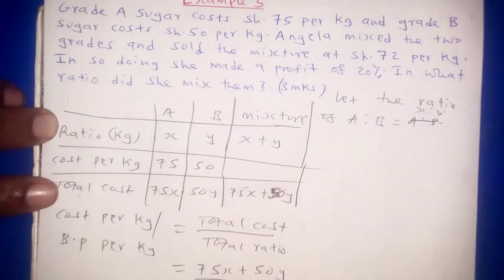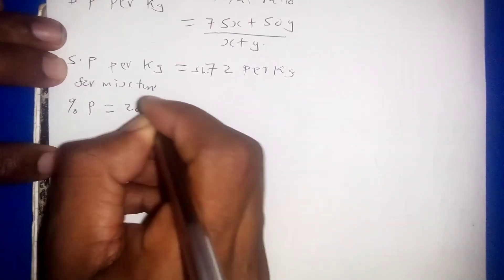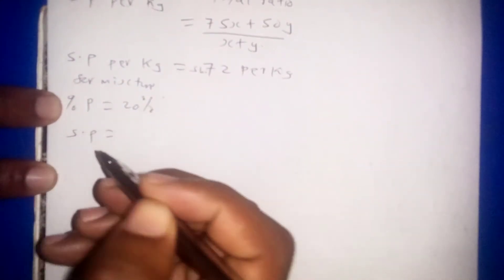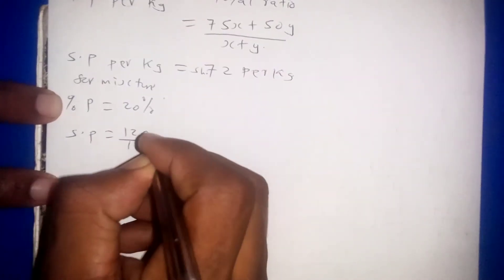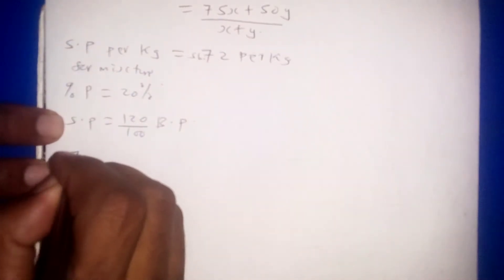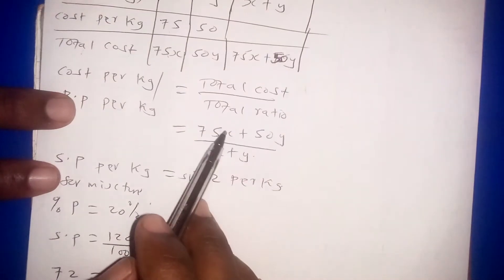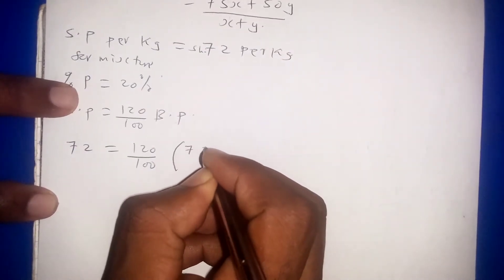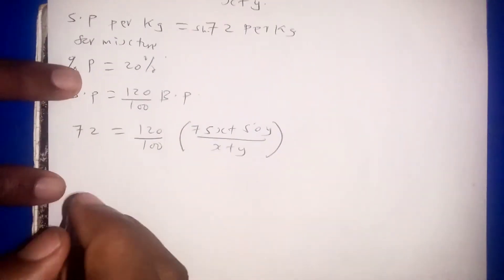With a 20 percent profit, the selling price equals 120 percent of the buying price. So 72 = (120/100) × (75x + 50y)/(x + y), which gives 72 = 1.2 × (75x + 50y)/(x + y).